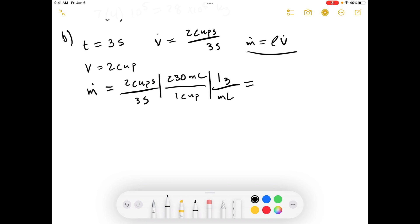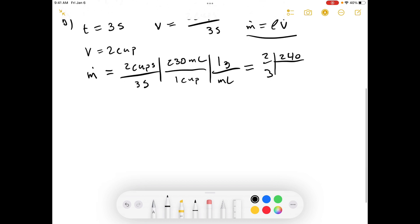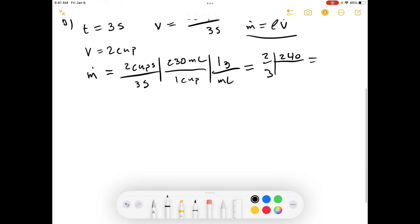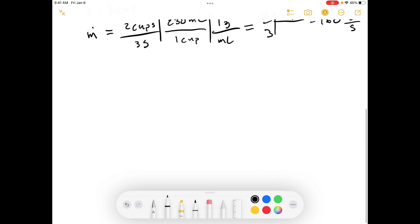There are about 230 milliliters per cup, and 1 gram per milliliter water density. Let's do an order of magnitude adjustment here. We've got 2 and 3, and instead of 230 we can say it's about 240 because you can divide that pretty easily. So 3 goes into 24, 8 times. So 8 times 2 is 16 grams per second. There you go.